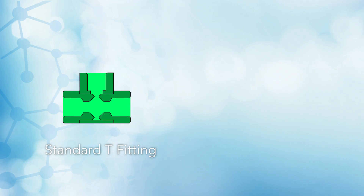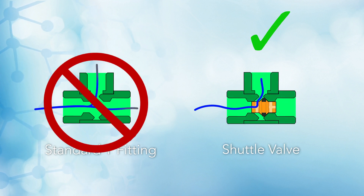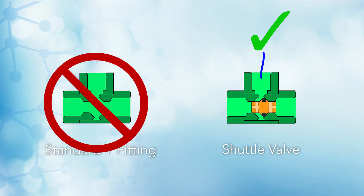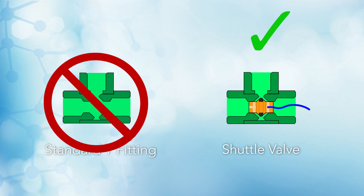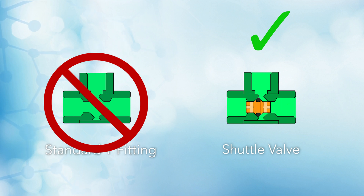Today I want to talk about shuttle valves and why you might be having a problem in the way you feel it should be working. First, it's important that you realize that you cannot use a shuttle valve as a pressure selector or any kind of selector. It is simply designed to not allow one input pressure port to cross over into the other inlet pressure port, but only go to the outlet port.